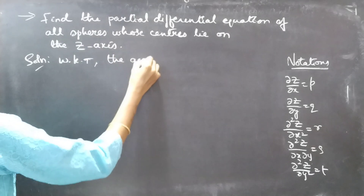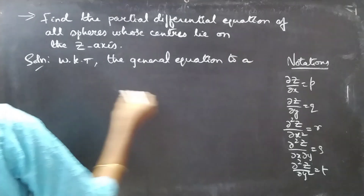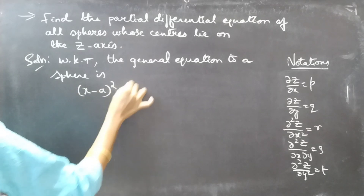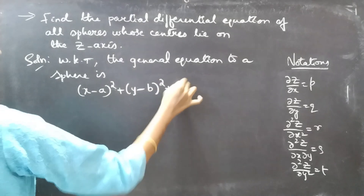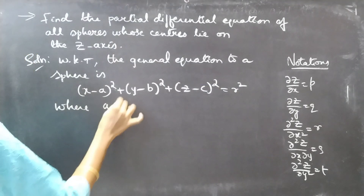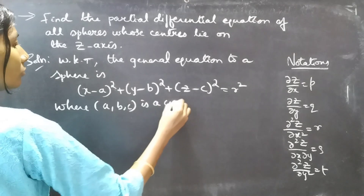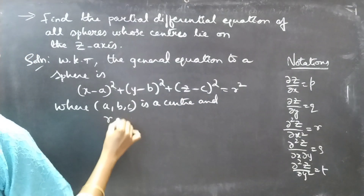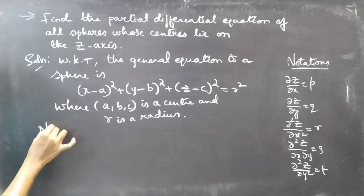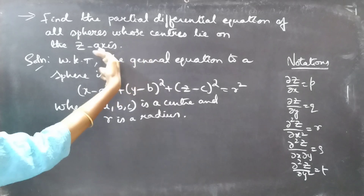Coming back to the problem: the general equation of a sphere is (x − a)² + (y − b)² + (z − c)² = r², where (a, b, c) is the center and r is the radius. Since we are asked to find the partial differential equation of all spheres whose center lies on the z-axis, the center is (0, 0, c).